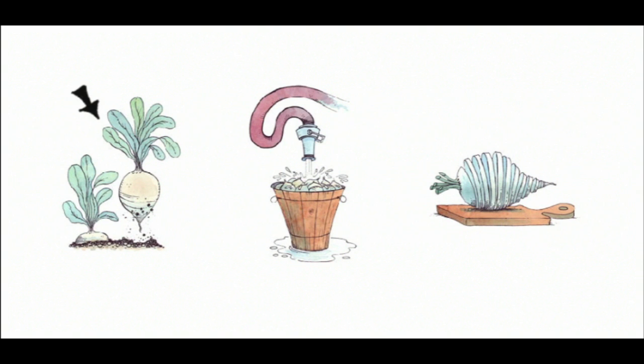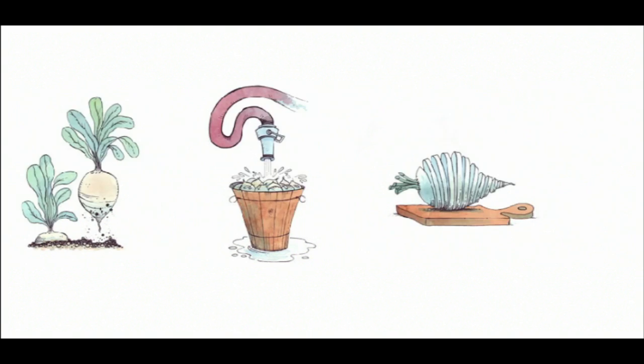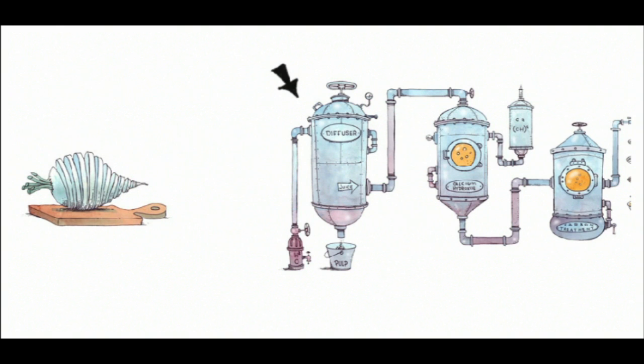Sugar beets are grown in the ground, so they are thoroughly washed before being processed. Once washed, the beets are sliced and placed in a diffuser where water runs against the beet slices to extract raw sugar juice.